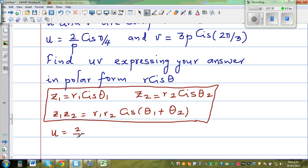So let us rewrite: u is 2 over p cis π/4 and v is 3p cis 2π/3.